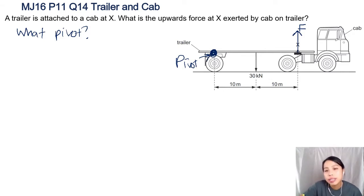That means the weight of the trailer will cause a clockwise torque, and then the upward force will cause the anti-clockwise torque on the trailer. How about that? I think that sounds better.